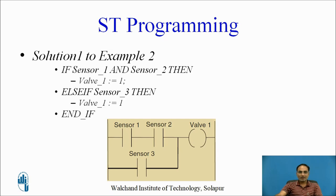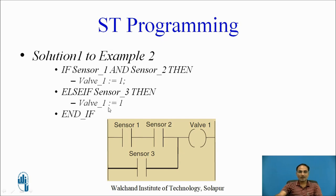The second solution using an IF-THEN block reads: IF Sensor1 AND Sensor2 THEN Valve1 := 1 ELSIF Sensor3 THEN Valve1 := 1 END_IF. The meaning is: if Sensor1 and Sensor2 outputs are both satisfactory then turn Valve1 on; else if Sensor3 output is satisfactory then also turn Valve1 on.